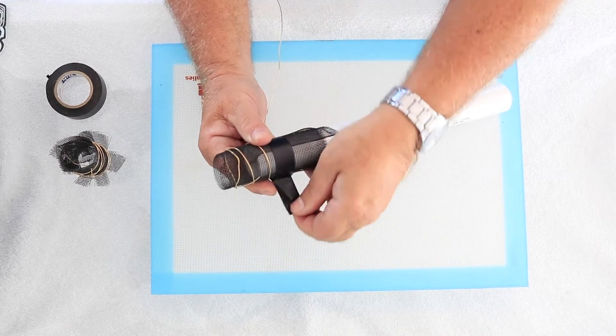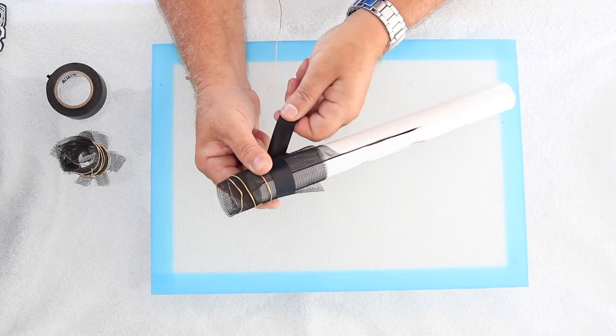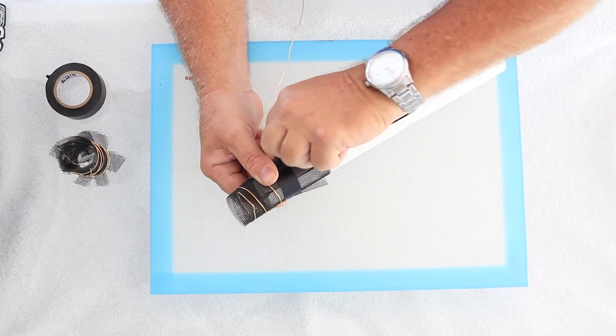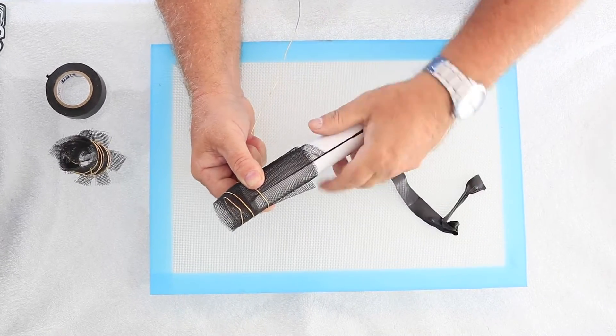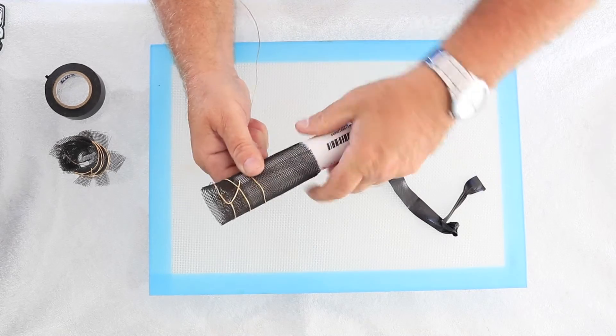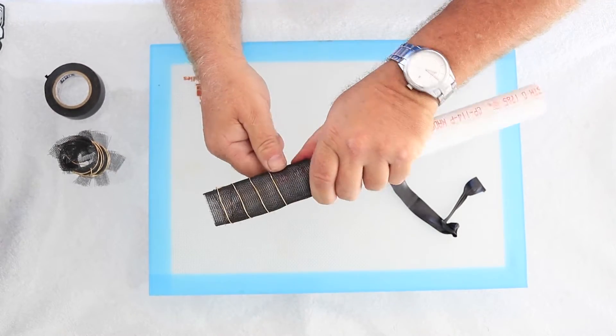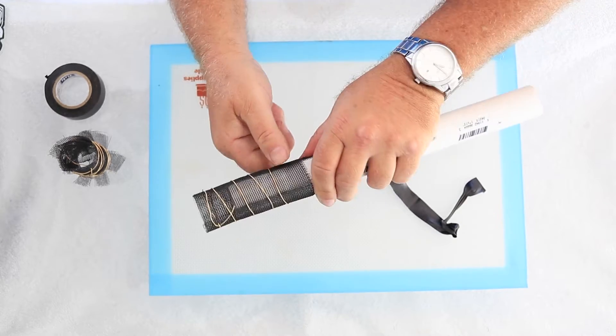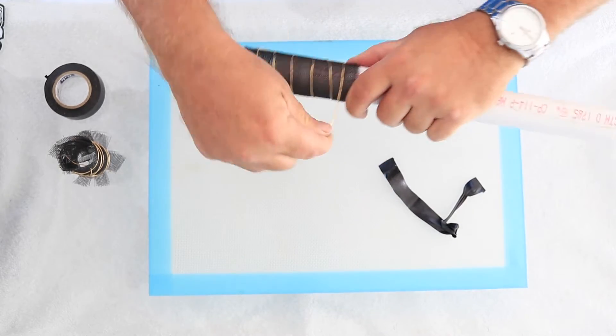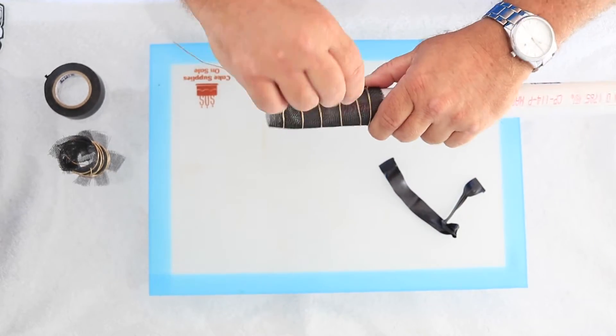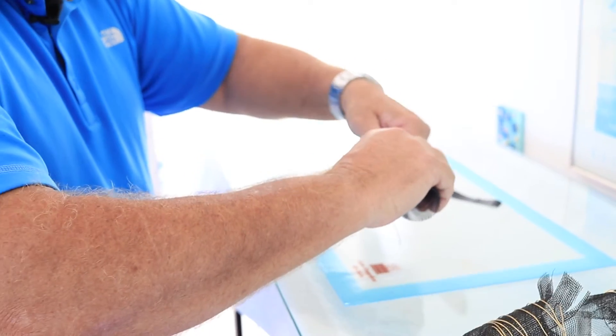Okay, right here we're going to have to take our tape off. Just keep winding around. And then we'll slide it off completely.